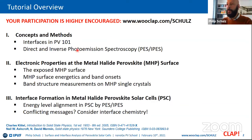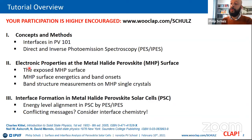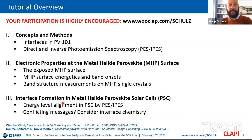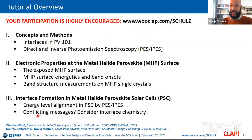We will begin with a couple of methods and concepts, starting with interfaces in PV. Then I will discuss direct and inverse photoemission spectroscopy — PES and IPES. In the second part, we move on to electronic properties at the metal halide perovskite surface: energetics, band onsets, and whether we can measure band structure on single crystals. Eventually, we come to the holy grail: interface formation in metal halide perovskite solar cells, energy level alignment, conflicting messages, and interface chemistry.